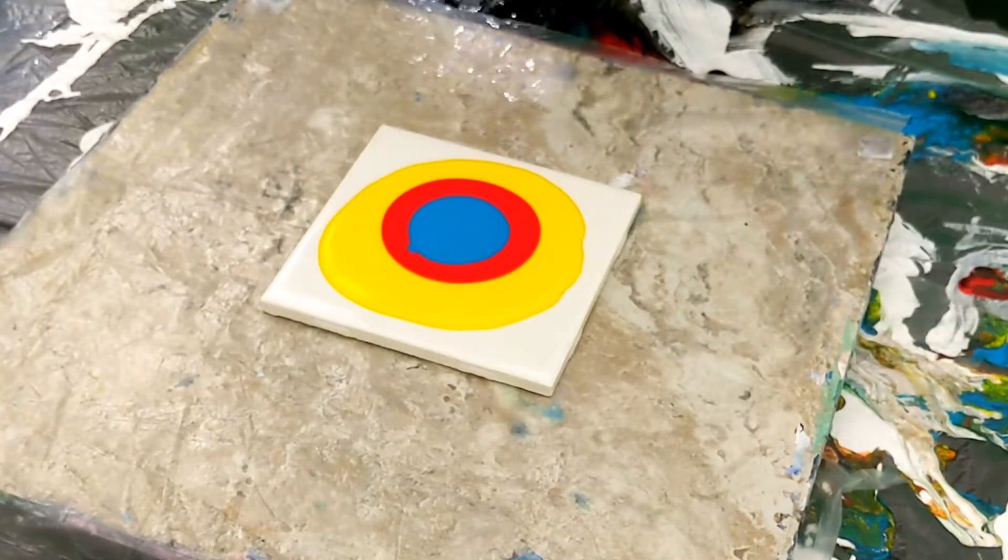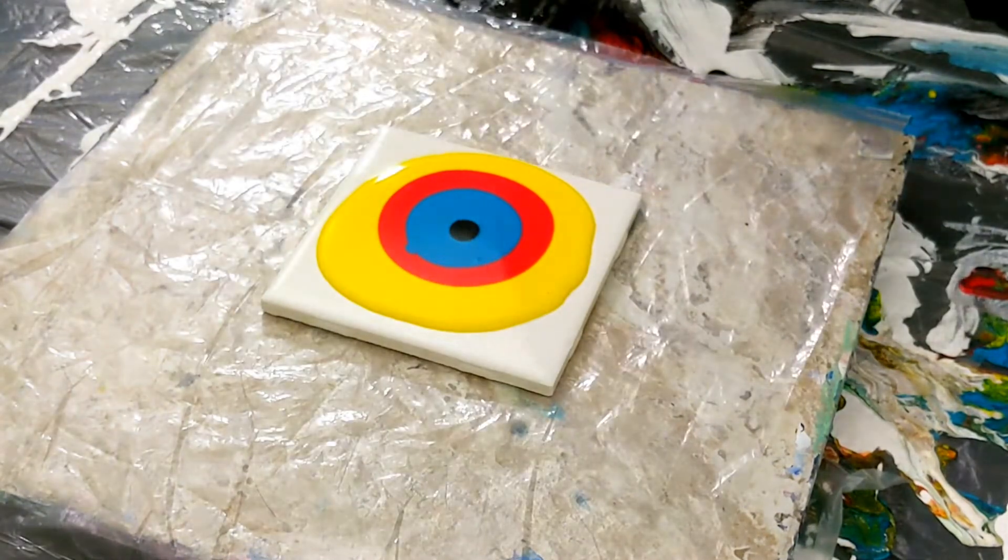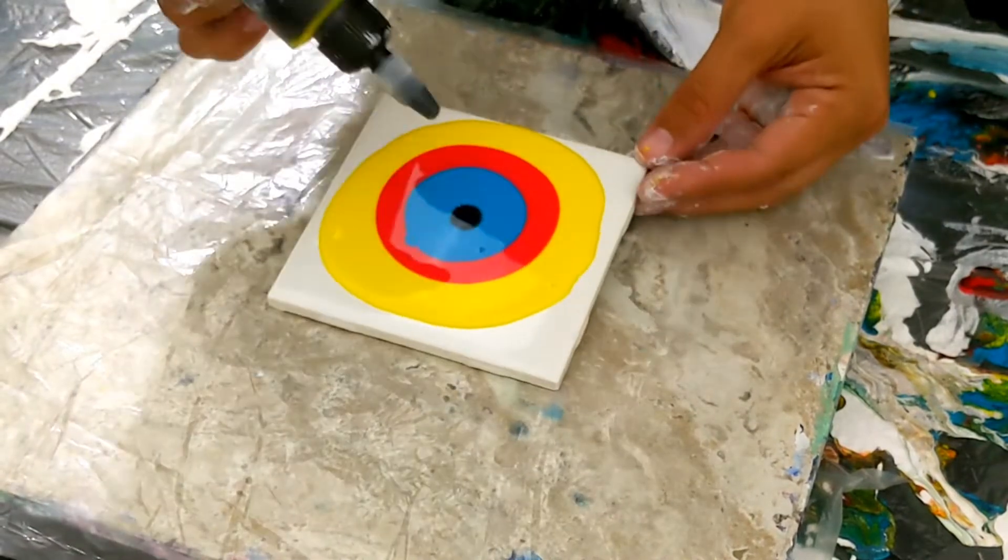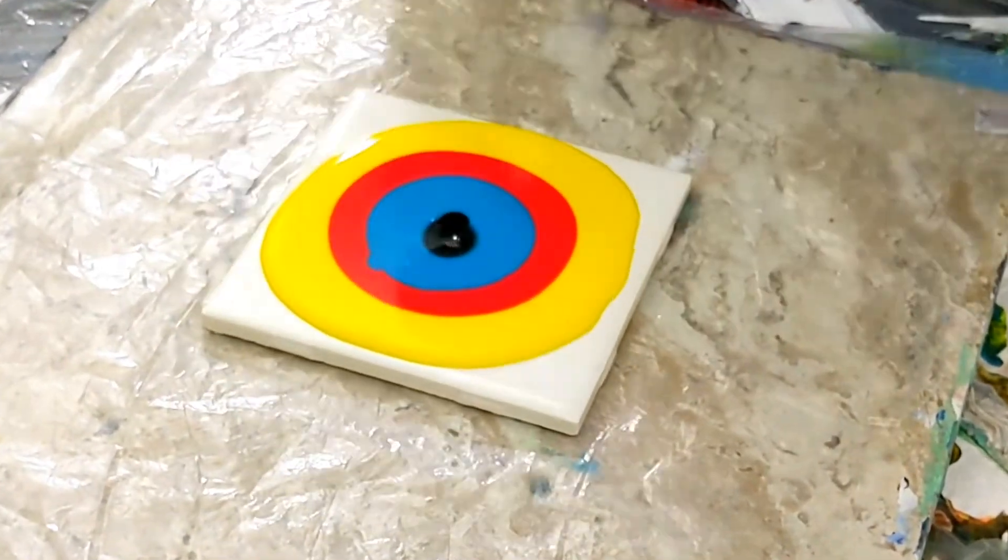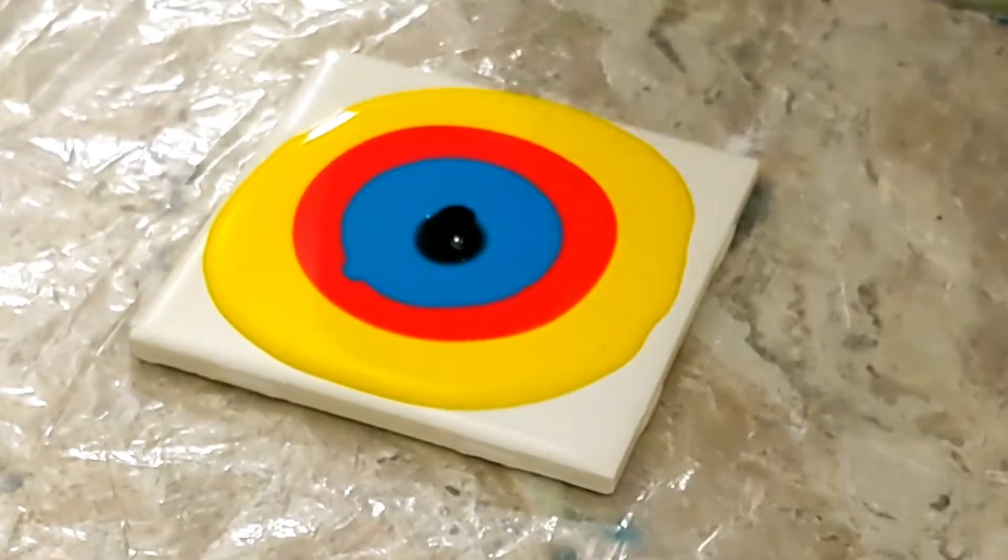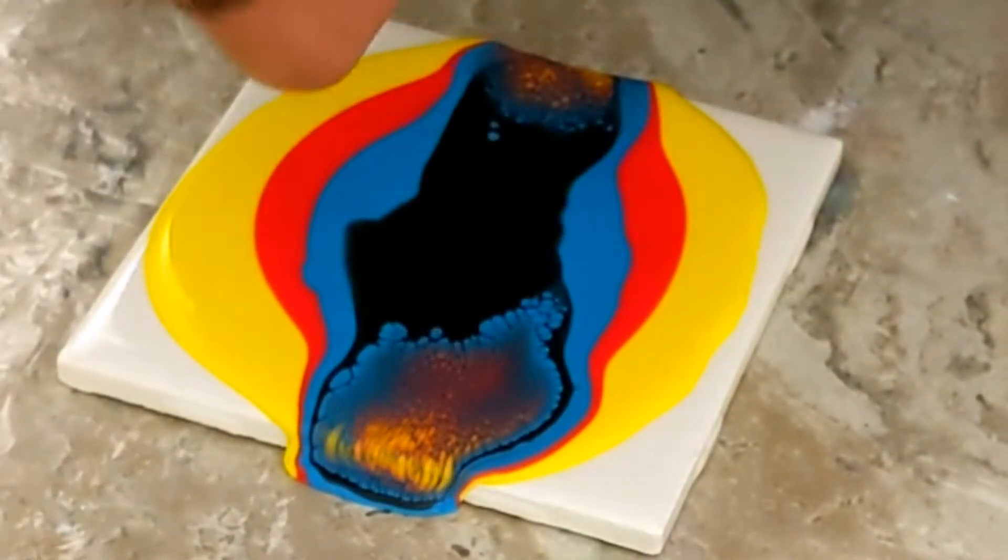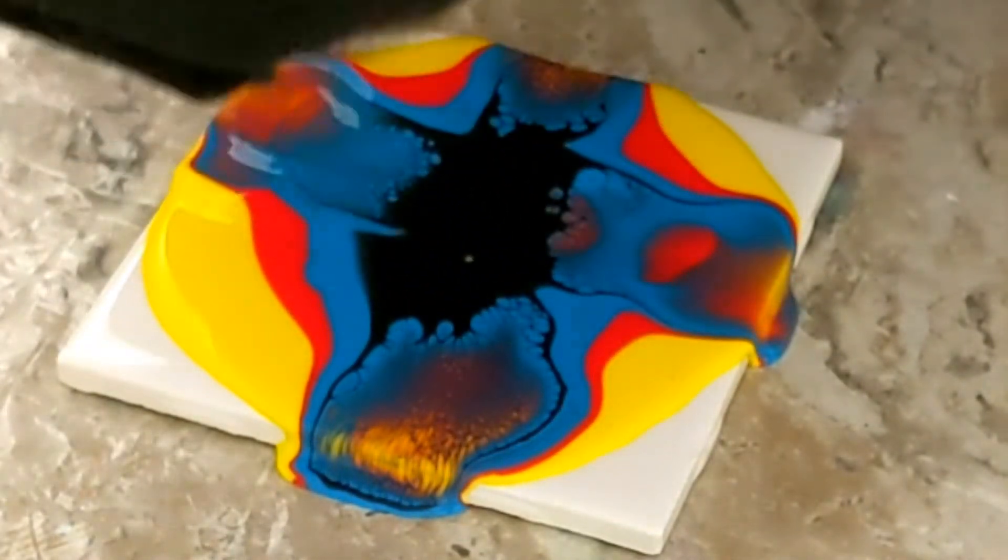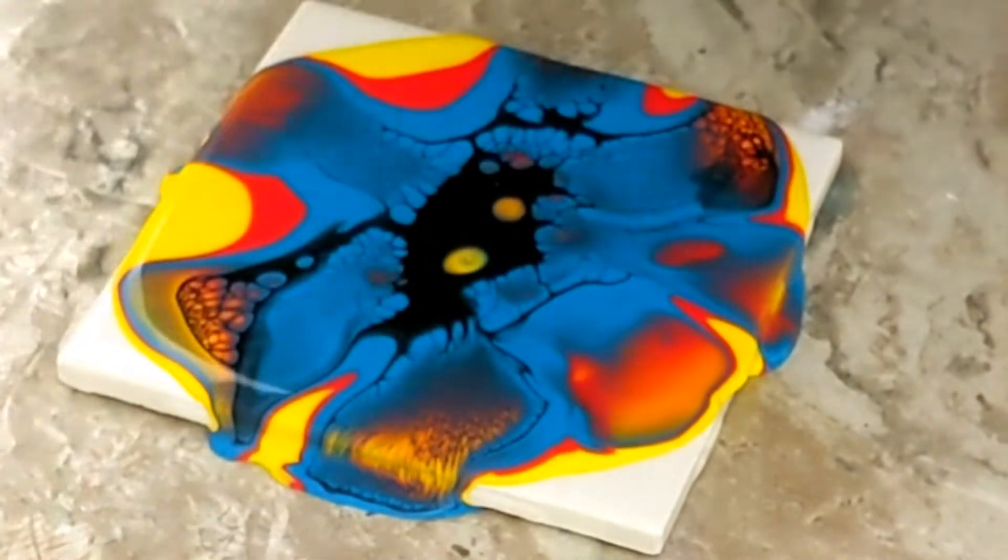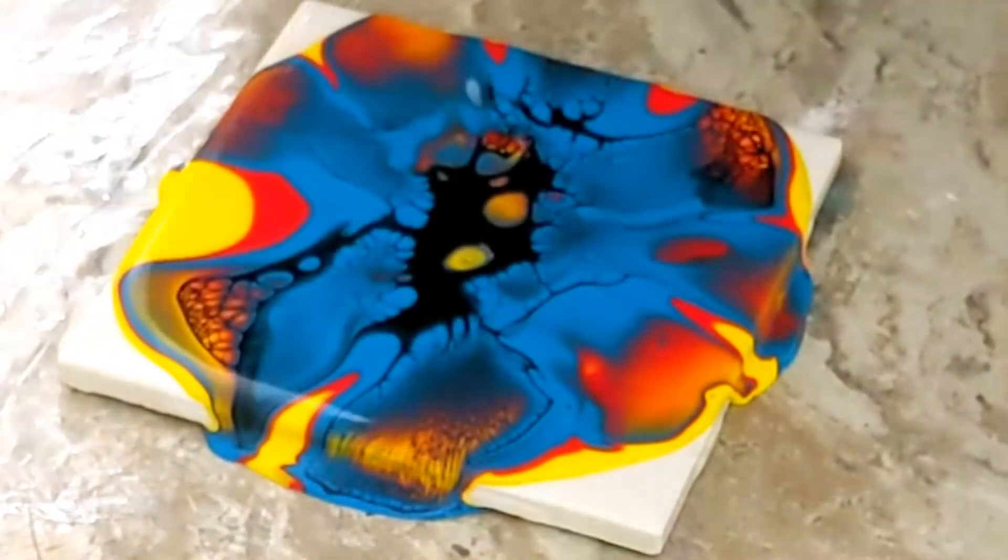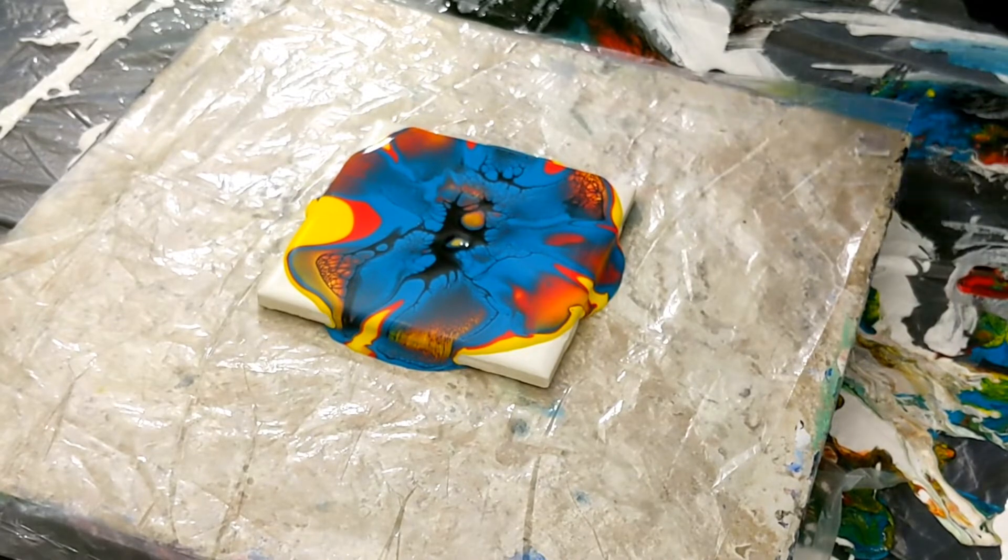So I'm gonna go ahead and just drop a little nugget of paint right there. Maybe just a little bit more, maybe just a little bit more right there. All right, we're gonna blow it out, we're gonna spin it out and see what happens. A little bit more this way. All right, so we're gonna spin it out. Hopefully I hit record. Cool, let's rock and roll.